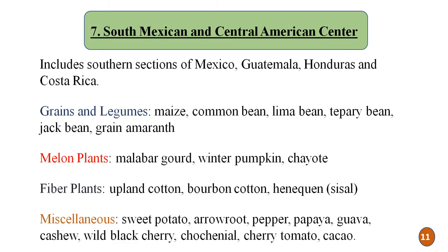The seventh center is the South Mexican and Central American center, which includes the southern section of Mexico, Guatemala, Honduras, and Costa Rica. These are the different plants included in this seventh center of origin.